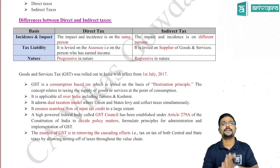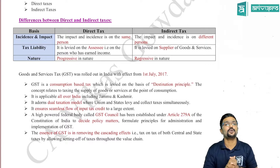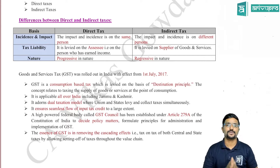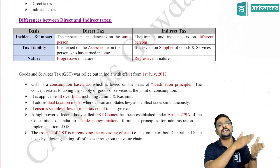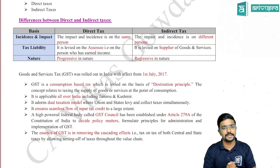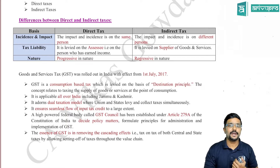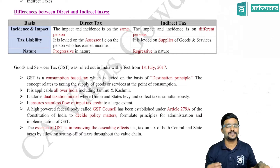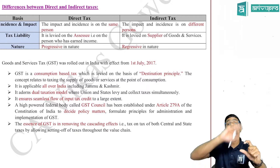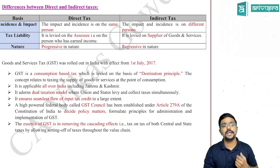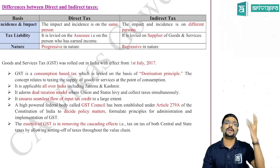Coming to indirect tax, the impact and incidence is on two different persons. Like GST or customs — the person who will be liable to pay tax normally will be the supplier, but he can levy and collect it from the recipient. So direct tax is levied on the assessee, that is the person who has earned the income, whereas indirect tax will be levied on the supplier but he has a right to collect it from the recipient.